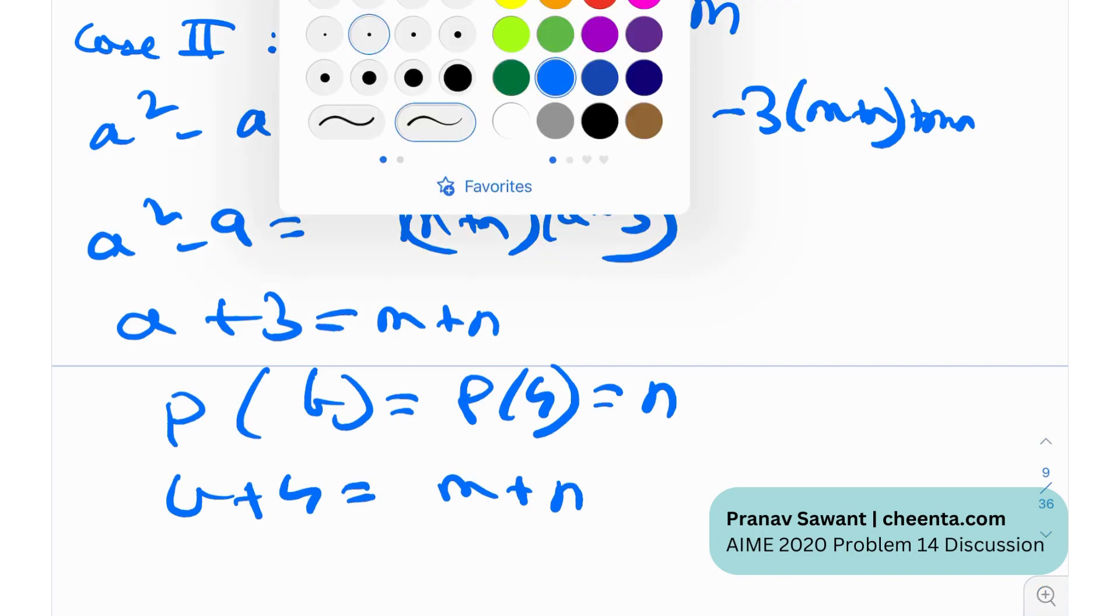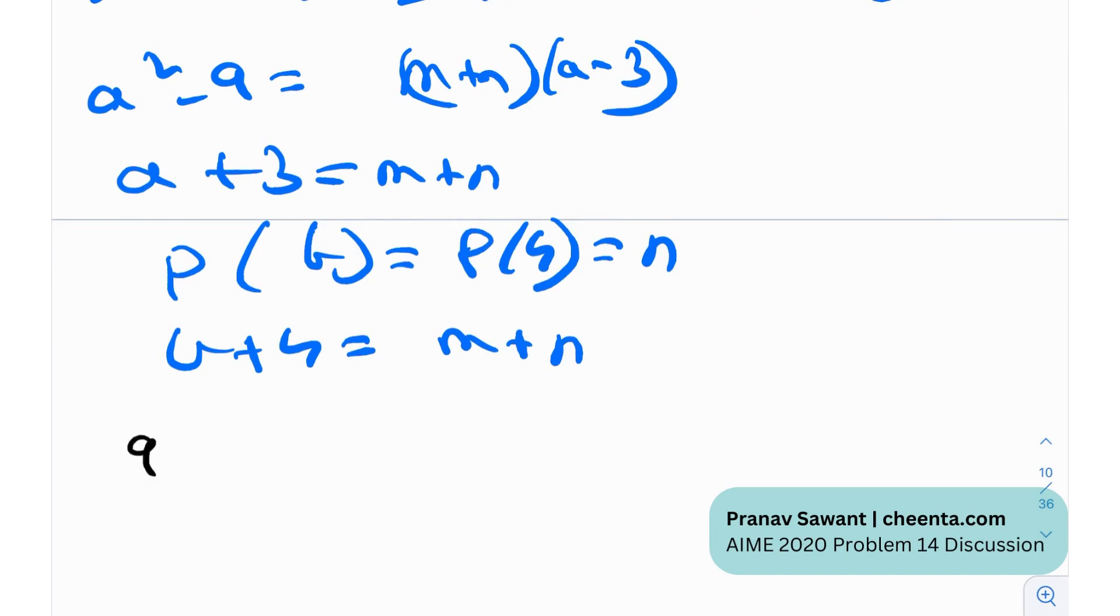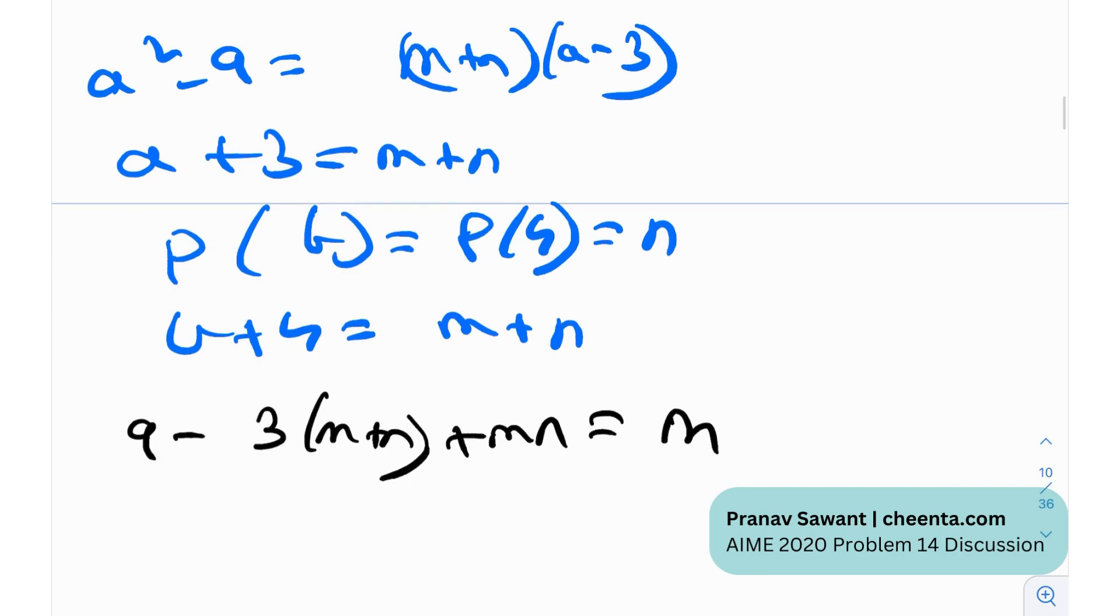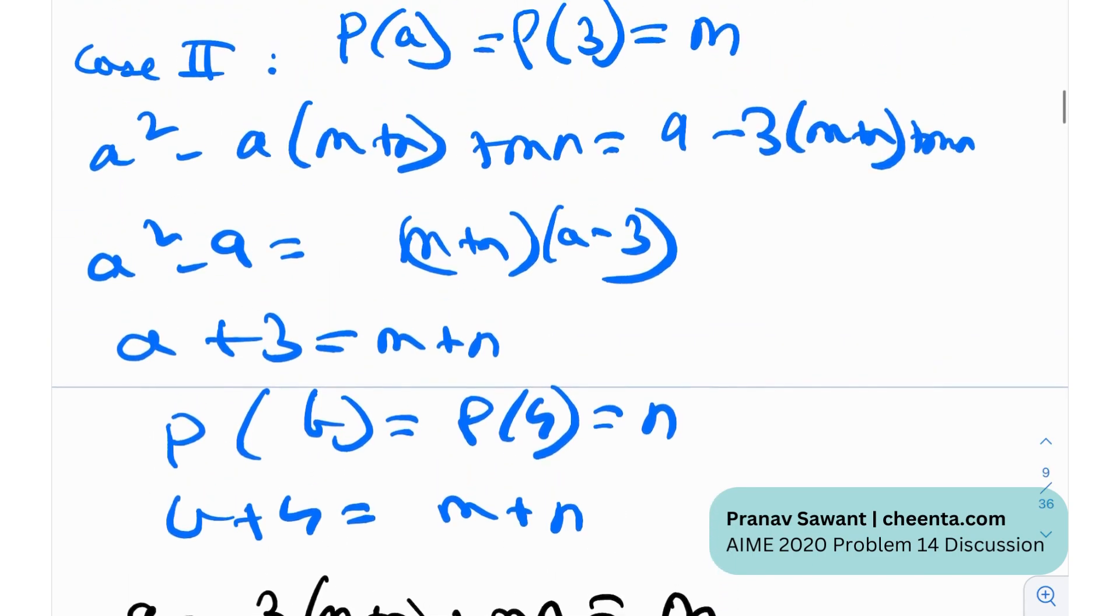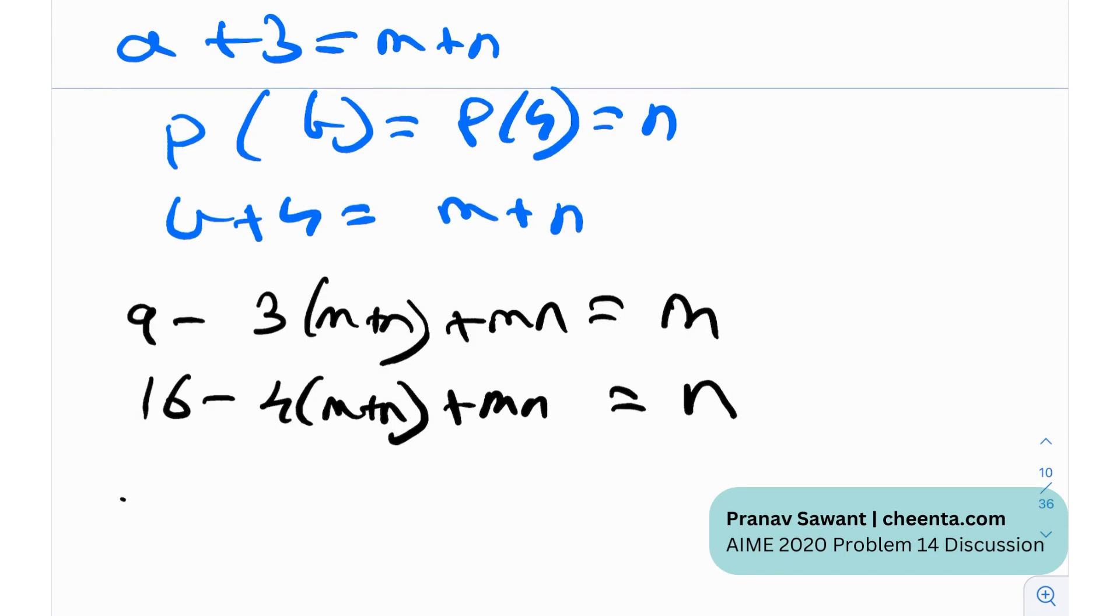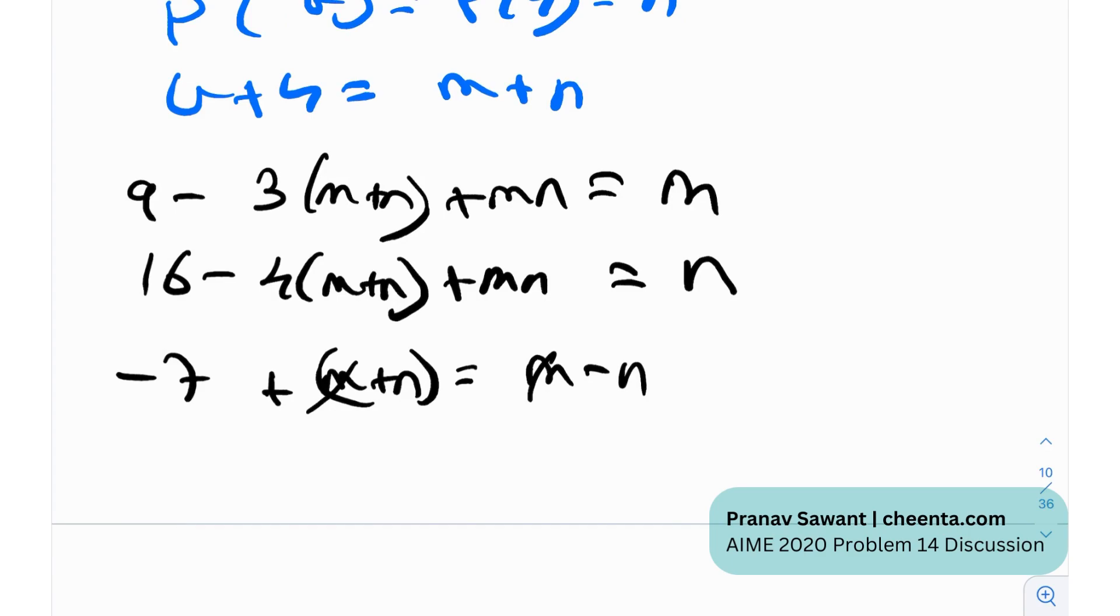So now at this point I actually have two equations. If you can see through the lines a little bit, I have two equations. One of them is 9 minus 3 times m plus n plus mn equals m. That was obtained by putting p of 3 equals m. And the other one essentially that I had was 16 minus 4 times m plus n plus mn, and that was essentially equal to n. I obtained that by putting p of 4 equals n. So I got these two equations, and if I subtract both of these, what will I get? I will get minus 7 plus m plus n equals m minus n. So I can just subtract m from both sides, and I'll get 2n equals 7.